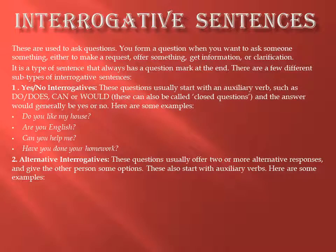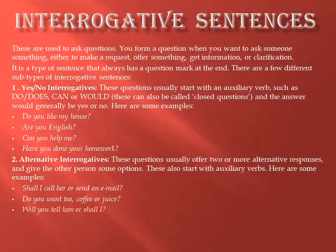The second subtype is the alternative interrogative, also known as choice questions or choice interrogative. These questions usually offer two or more alternative responses and give the other person some options. These also start with auxiliary verbs. Here are some examples: Shall I call her or send an email? Do you want tea, coffee or juice? Will you tell him or shall I? Do you prefer long hair or short?